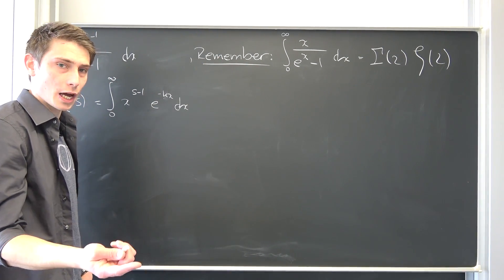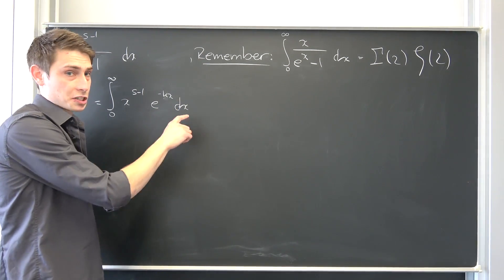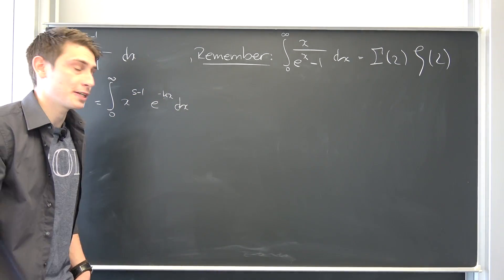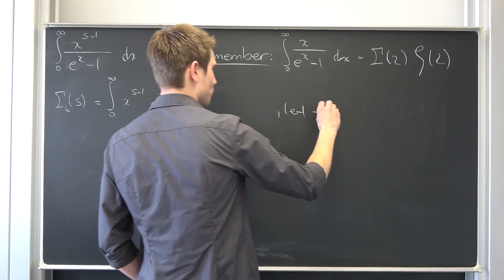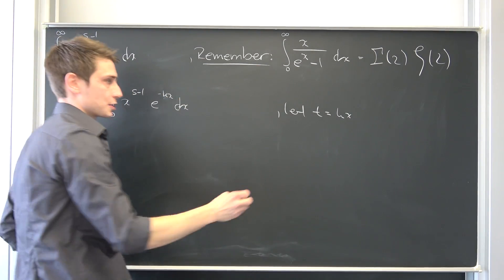Now naturally, I would like to introduce a little substitution to actually get our gamma function back because this right here is not our gamma function because of the factor k. But if we would set for example let some t be equal to k times x, then we actually get our gamma function back in the process.